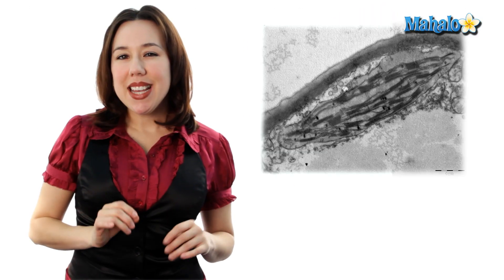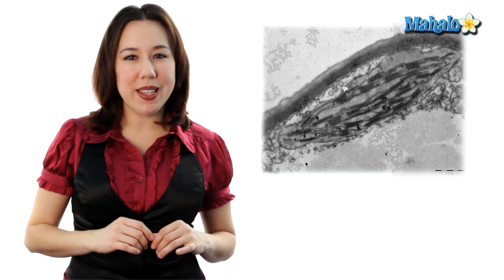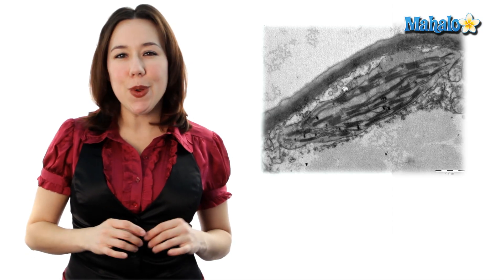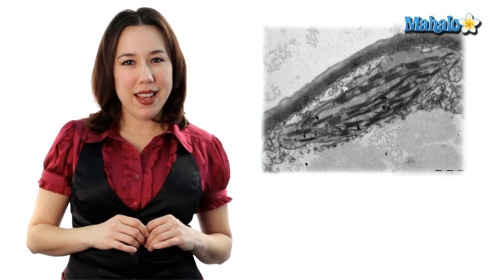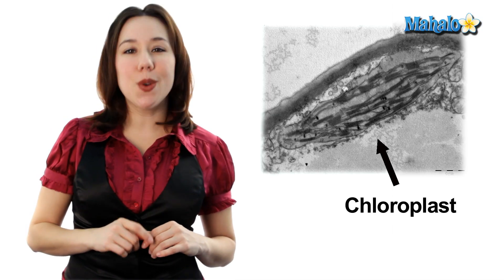Second, since plants are photosynthetic they have to have a special organelle to make that photosynthesis happen. That special organelle is called chloroplasts.